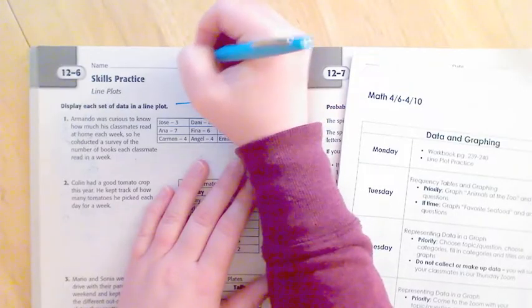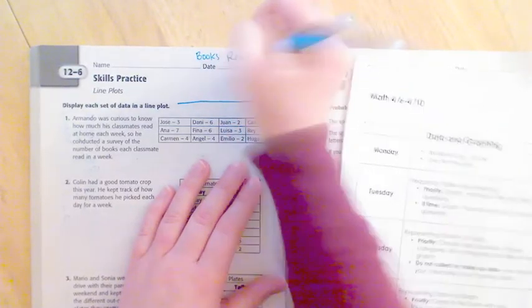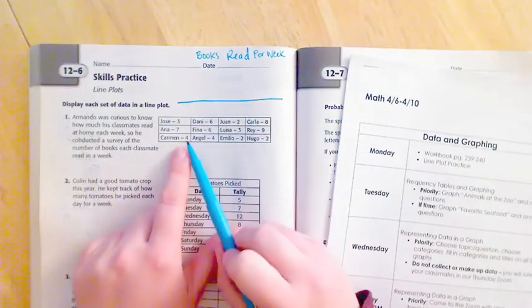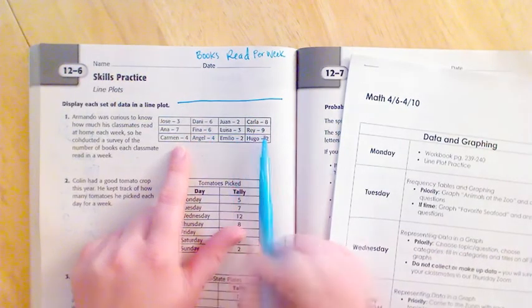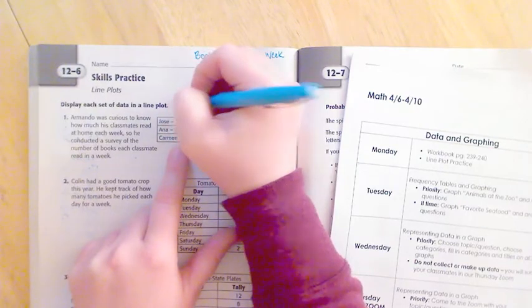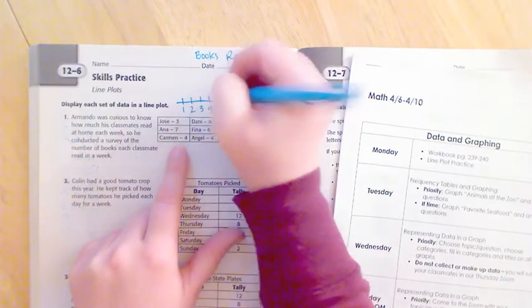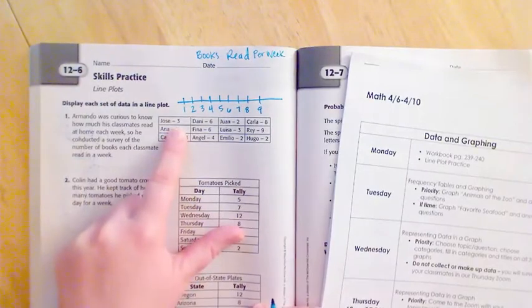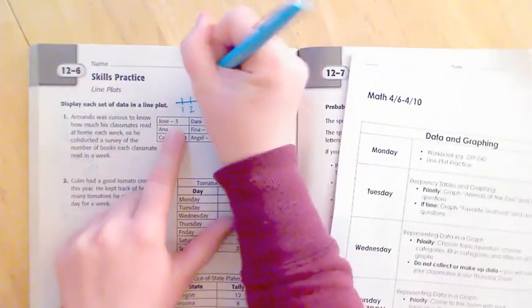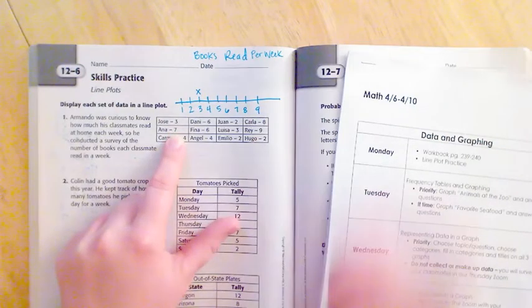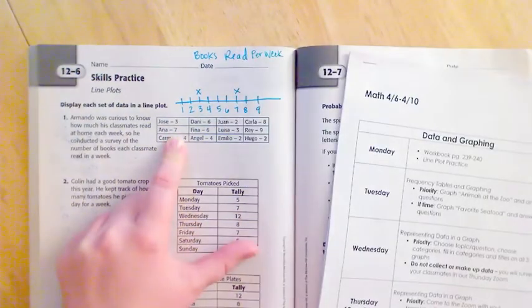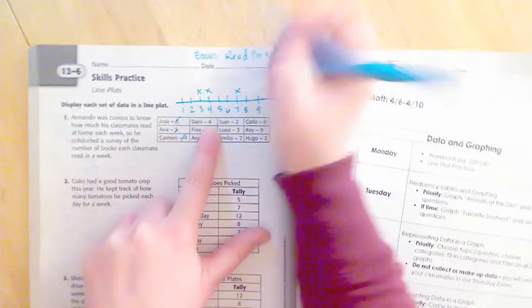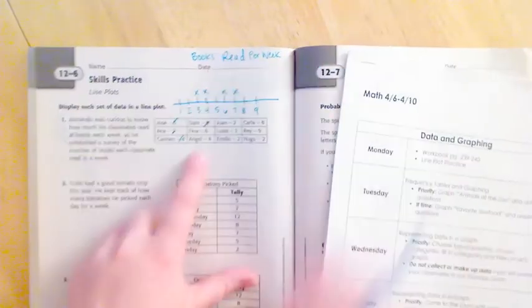My line plot's gonna look like this. I'm gonna draw my line and I'm gonna give it a title: books read per week. I see numbers all the way up to nine, so I'm just gonna do a scale of one to nine: one, two, three, four, five, six, seven, eight, nine. Jose reads three books so I'm gonna put one X for Jose. I read seven books, one X for seven. Anna Carmen reads four, one X for four. Danny reads six, put an X for Danny, and then you're gonna fill out the rest of the information.